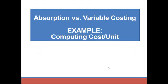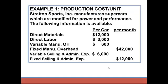Now let's look at an example. In this example, all we're going to do is compute the cost per unit. Stratton Sports Inc. manufactures supercars modified for power and performance. Each car has $12,000 of materials, $3,000 of labor, and $600 of variable manufacturing overhead. Fixed overhead in total for the month is $42,000. Variable selling and administrative expense is $6,000 per car — things like sales commissions — and fixed selling and administrative expense is $12,000 for the month.